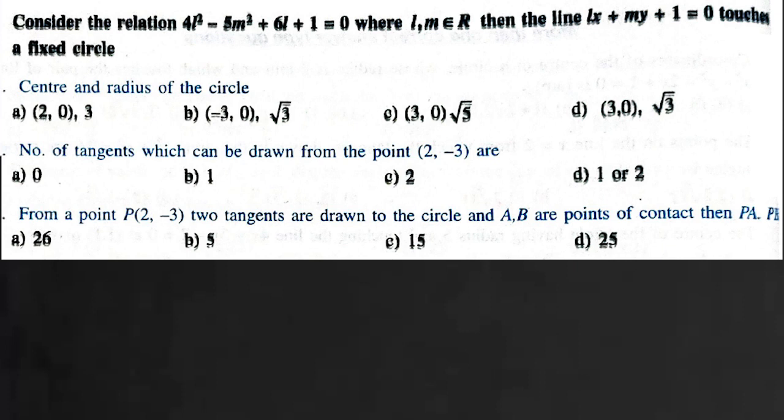Consider the relation 4l² - 5m² + 6l + 1 = 0. Then this line lx + my = 1 touches a fixed circle. We have to find the center and radius of this circle.